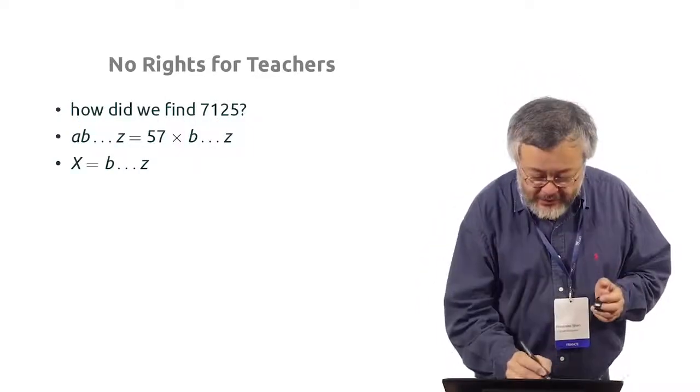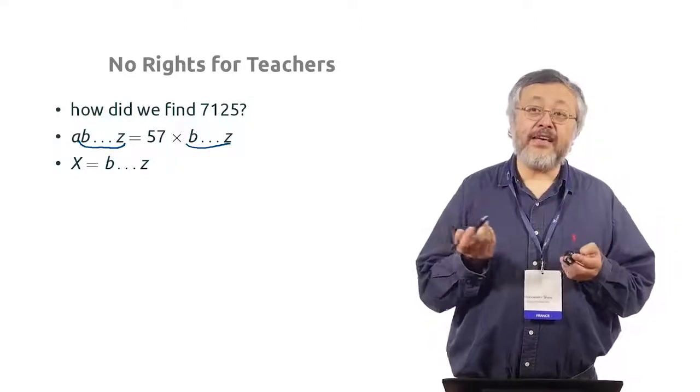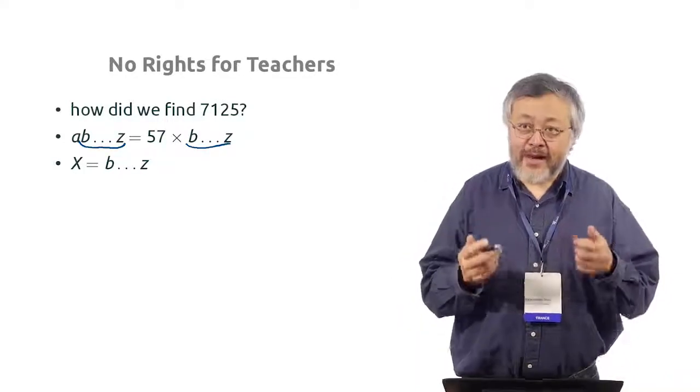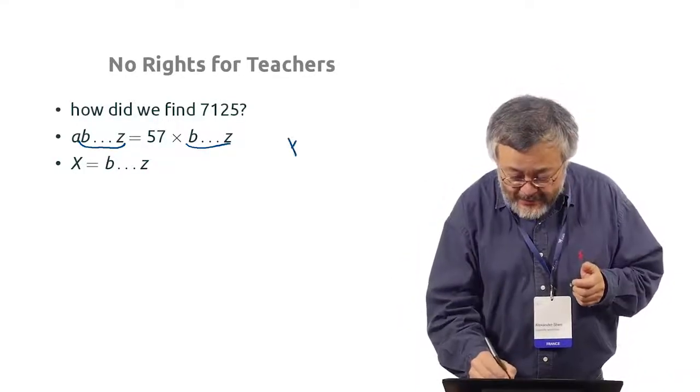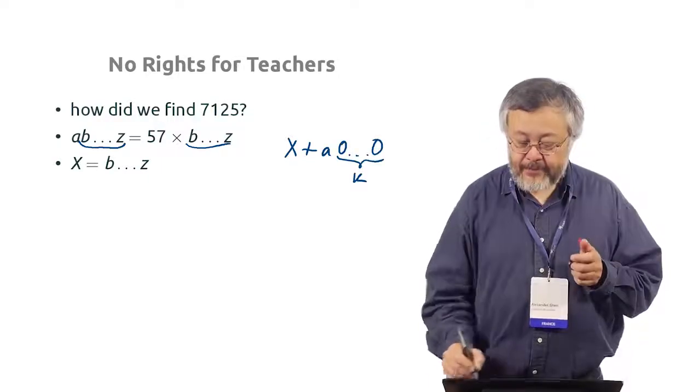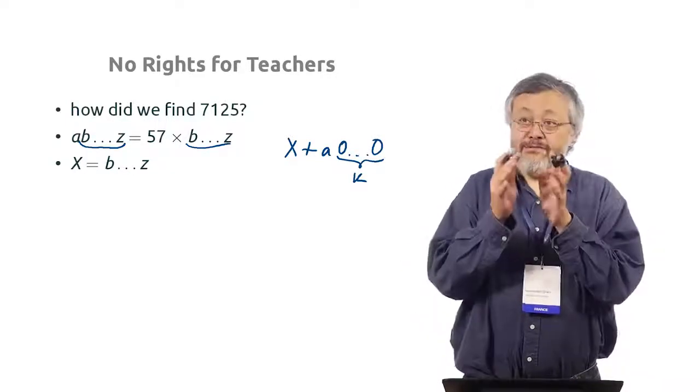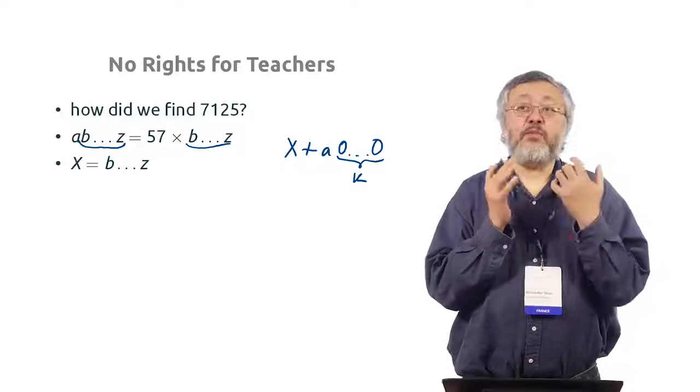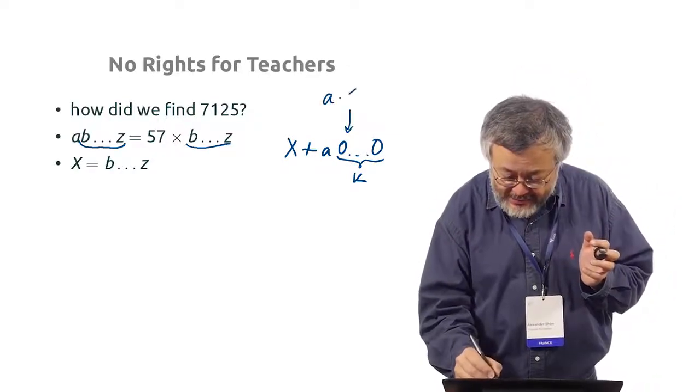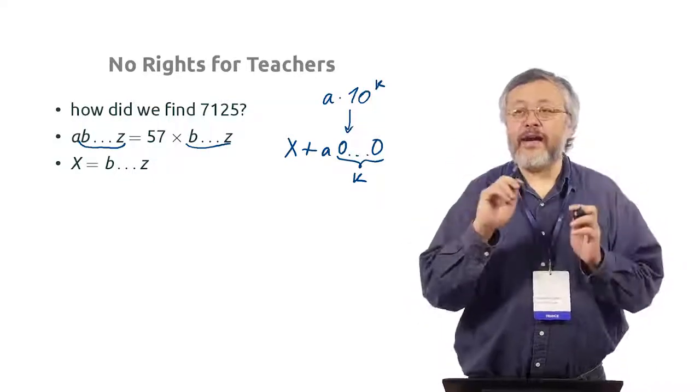Let's denote this part by x. And then on the right-hand side, we have 57x. It's easy. But on the left-hand side, we have x plus a000. And we need k zeros. And what is important is that if we add one zero, this means that we multiply a by 10. So actually, this thing is just a times 10 to the number of zeros.